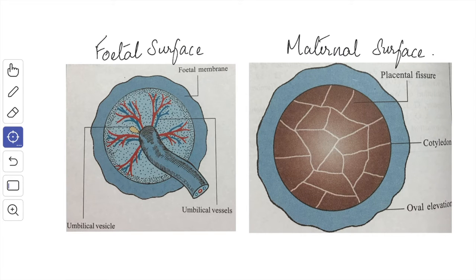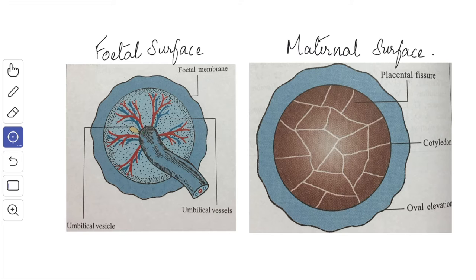This is a diagrammatic representation. The fetal surface of the placenta is smooth and has the umbilical cord attached close to its center. Beneath that you have the amnion, and beneath the amnion are the umbilical vessels radiating from the cord. Sometimes you have the extra-embryonic part of the yolk sac (the umbilical vesicle), connected by a fibrous remnant of the vitello-intestinal duct. The maternal surface is rough and irregular, mapped out into cotyledons limited by fissures occupied by the placental septum. The peripheral margin is also shown.